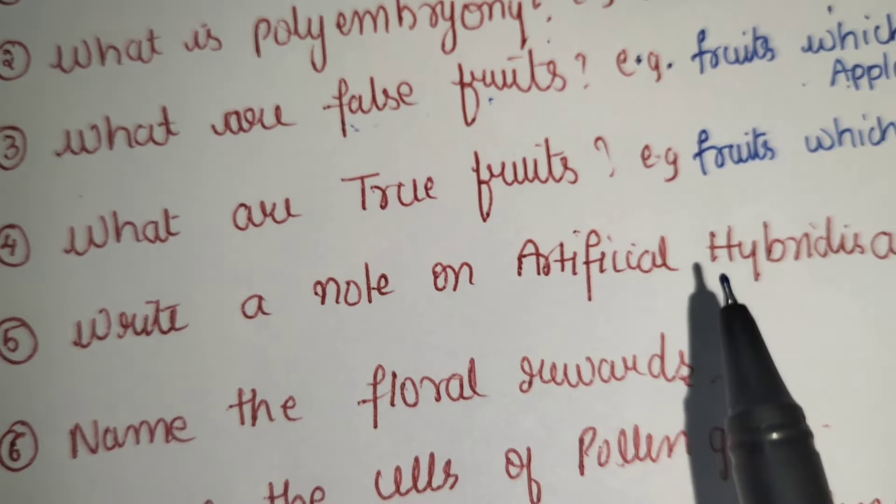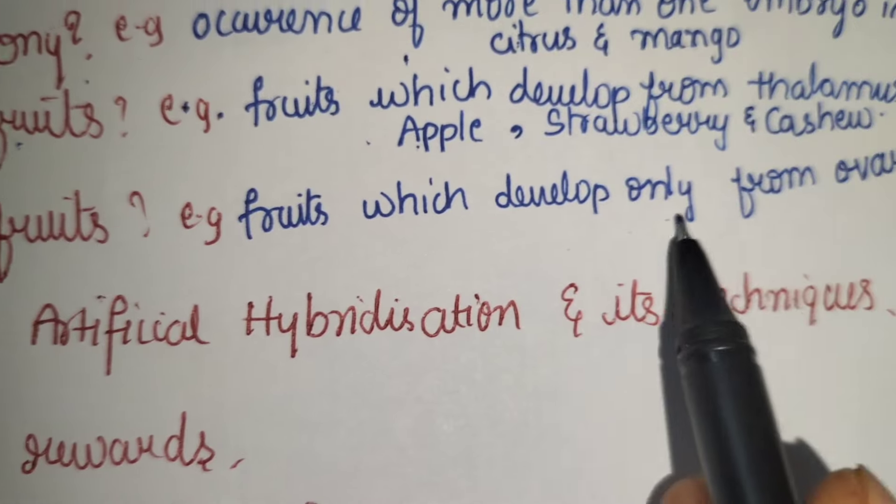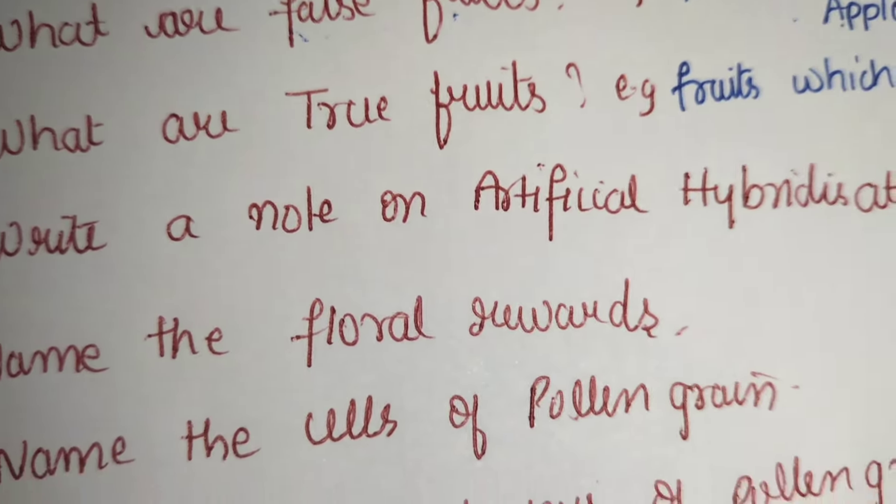What are true fruits? Fruits which develop only from the ovary are called true fruits.